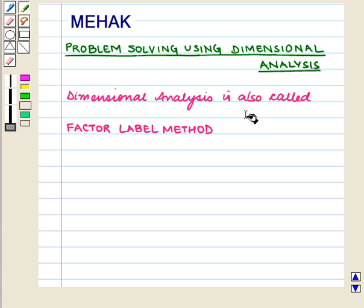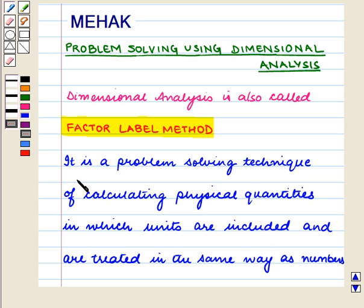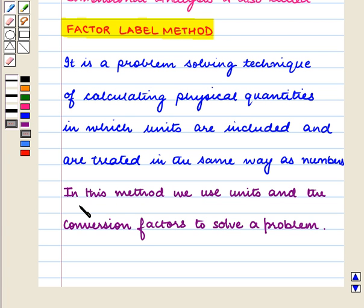Dimensional analysis is also called the factor label method. It is a problem solving technique of calculating physical quantities in which units are included and are treated in the same way as numbers. In this method we use units and conversion factors to solve a problem.